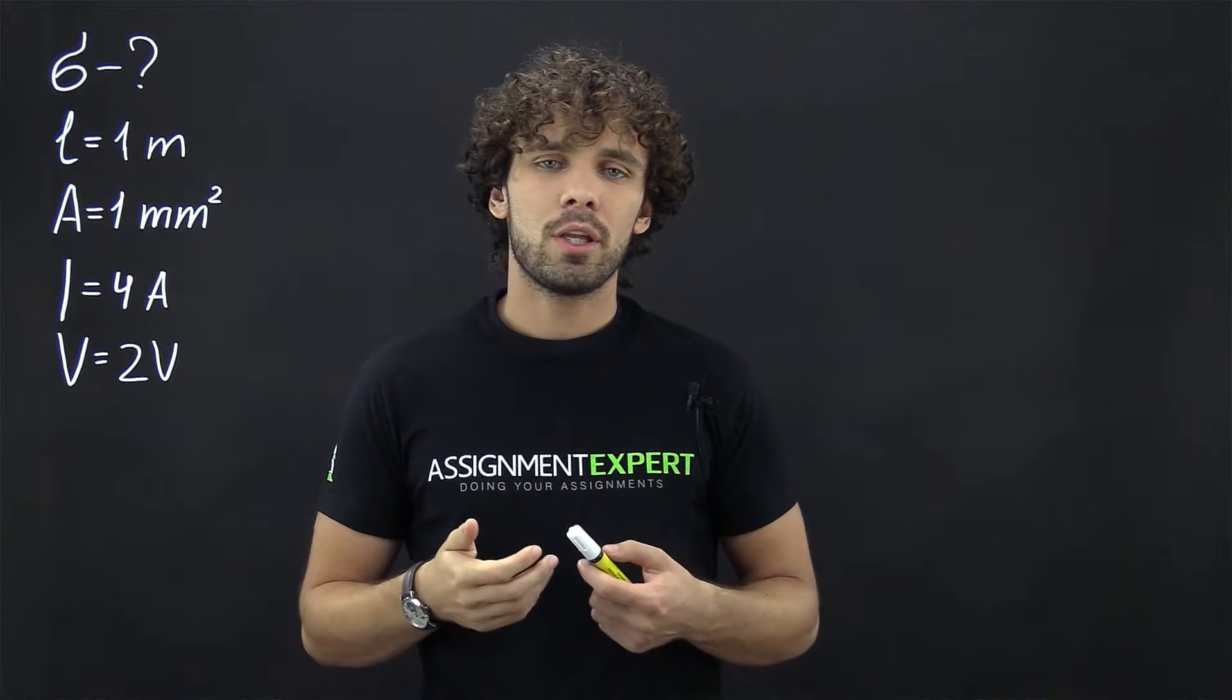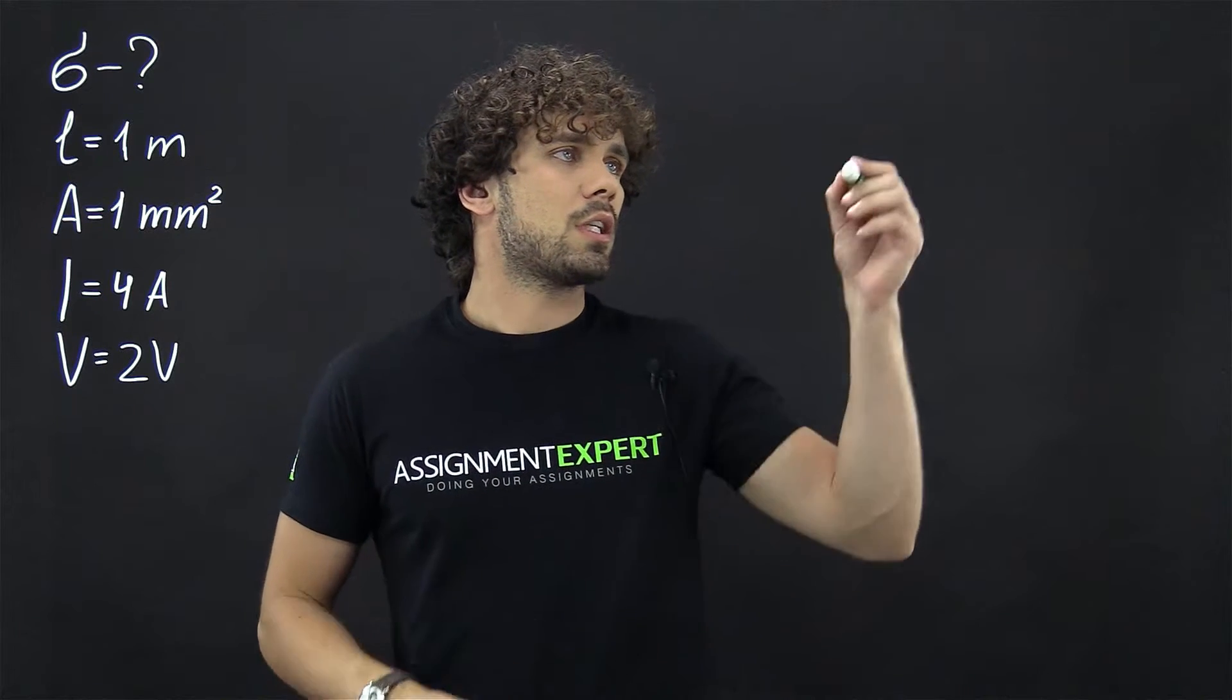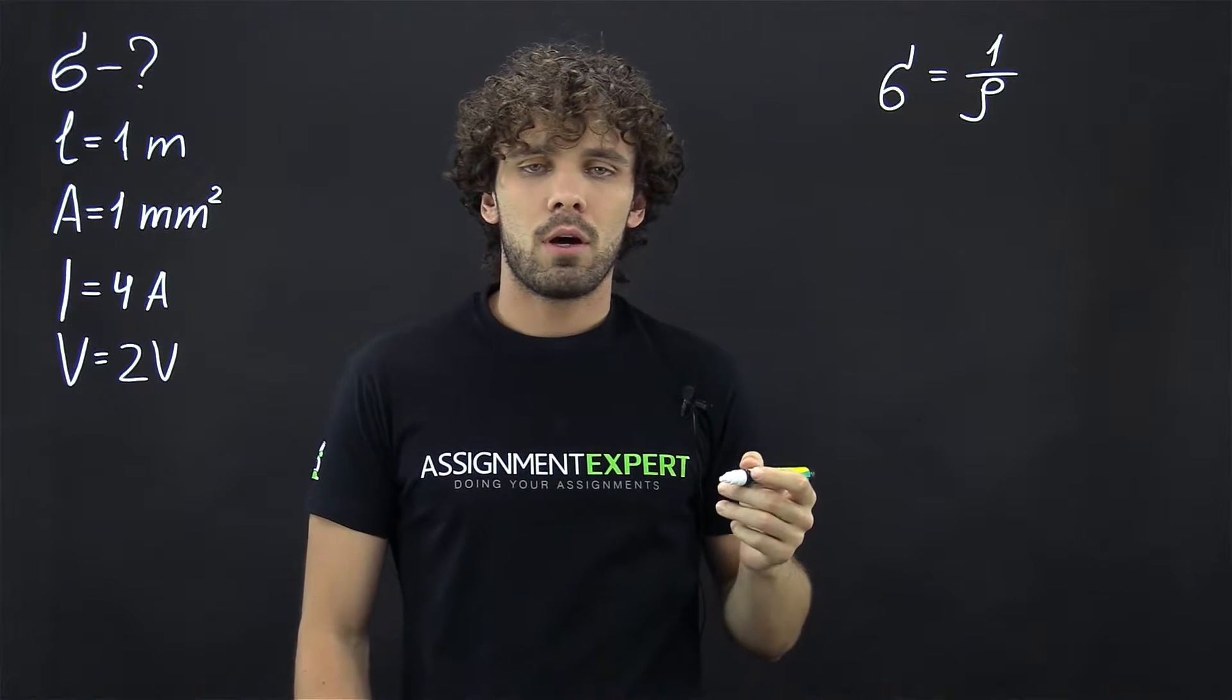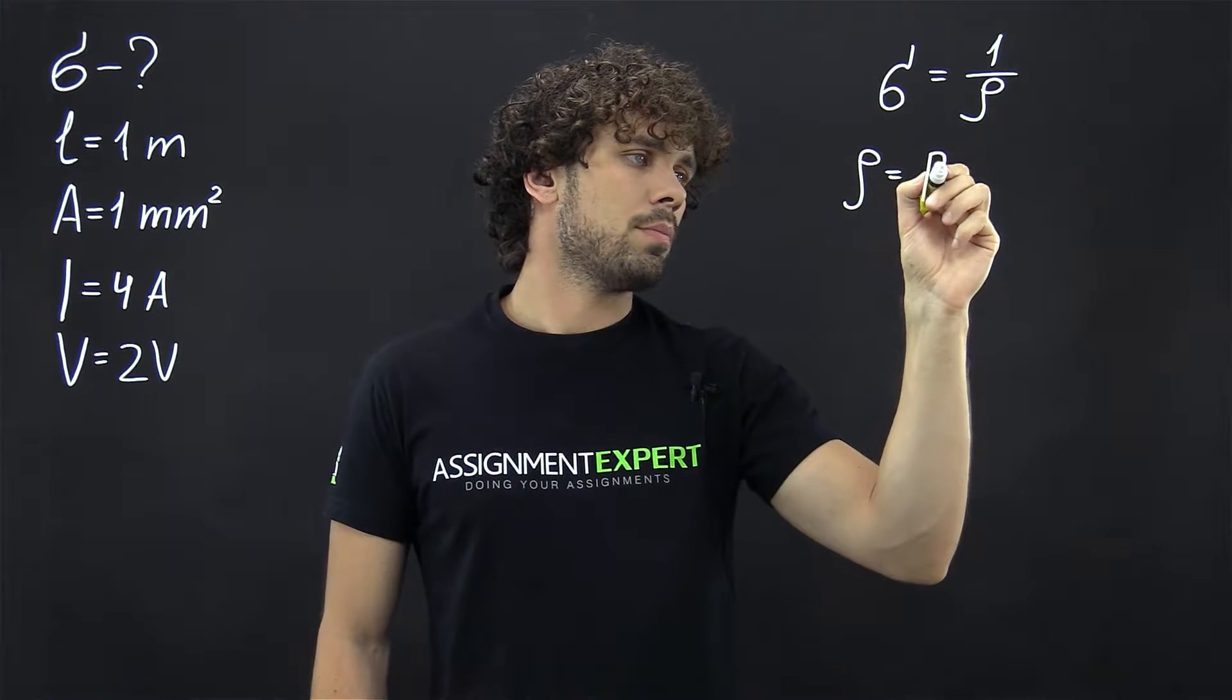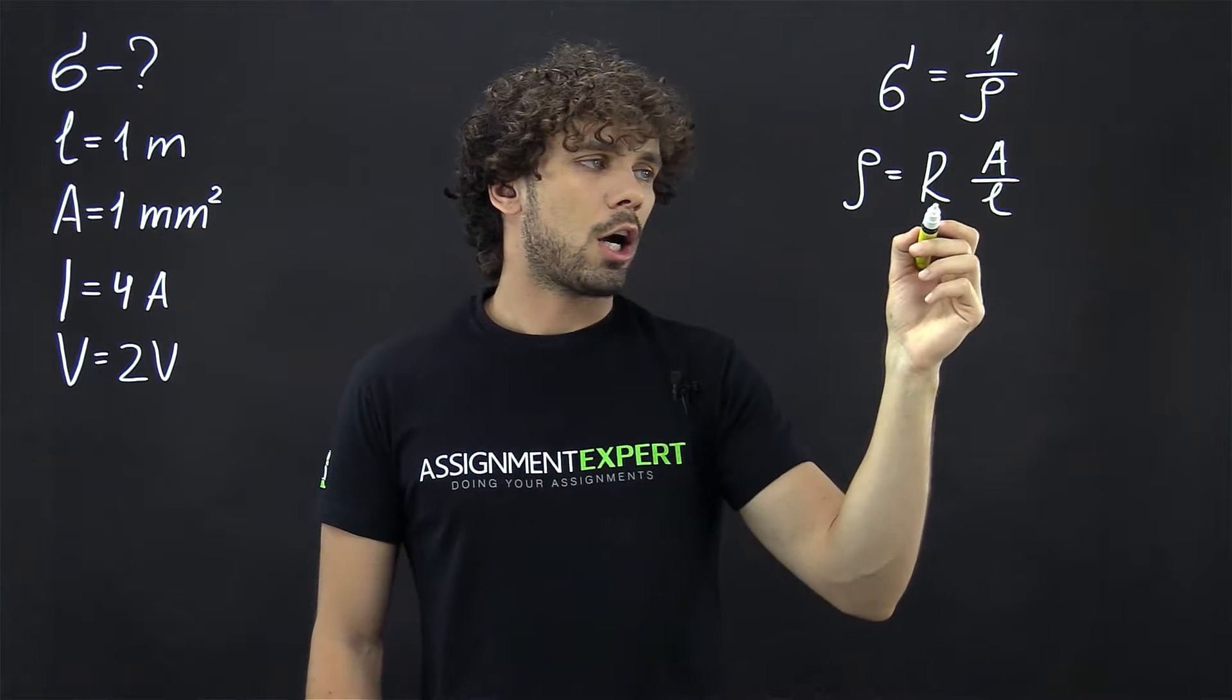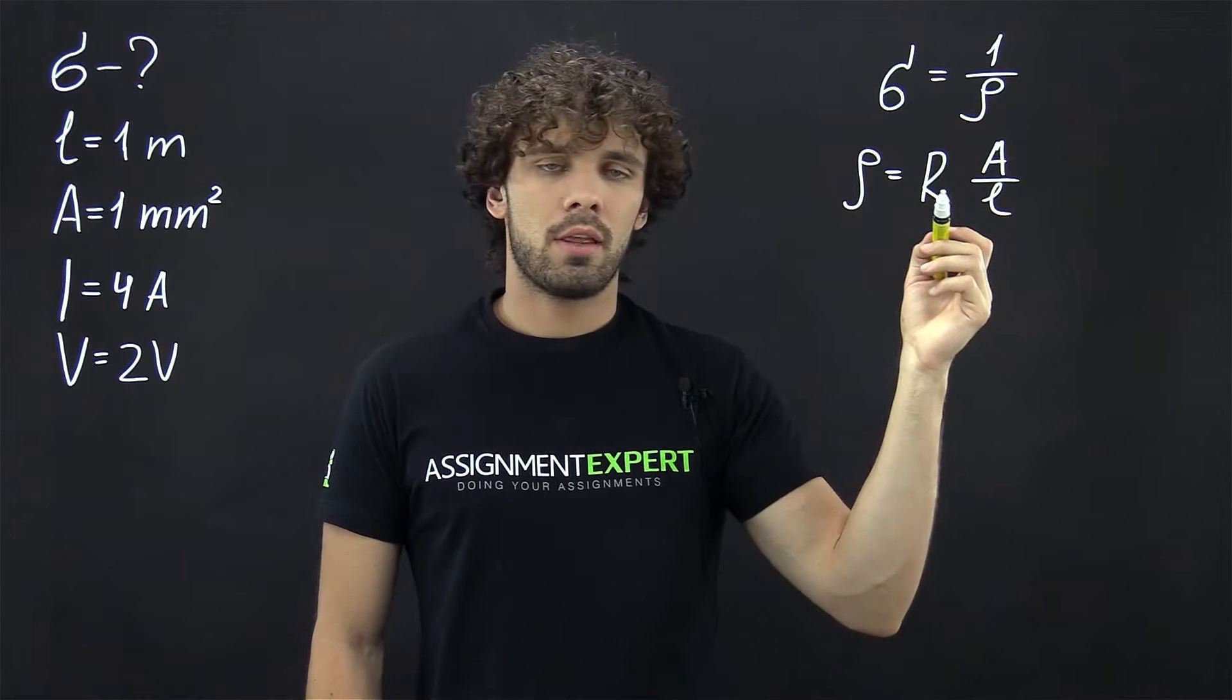As some of you may know, conductivity is the reverse of resistivity. So sigma equals 1 over rho. Now, the resistivity can be found from the following formula: rho equals R times A over L, where R, A and L are the resistance, the cross section and the length of the wire.